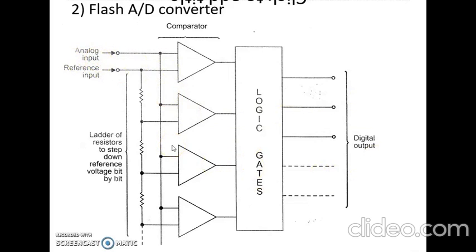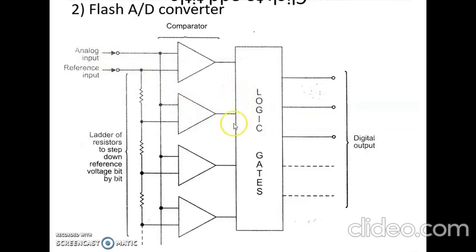A reference voltage is applied to a ladder of resistors, which steps down the reference voltage bit by bit. The voltage applied as the other input to each comparator is one bit larger than the voltage applied to the previous comparator in the ladder. When the analog voltage is applied, all comparators for which the analog voltage is greater than their reference voltage give a high output of one, and those for which it is less give a low output. The resulting outputs are fed in parallel to a logic system which translates them into a digital word.